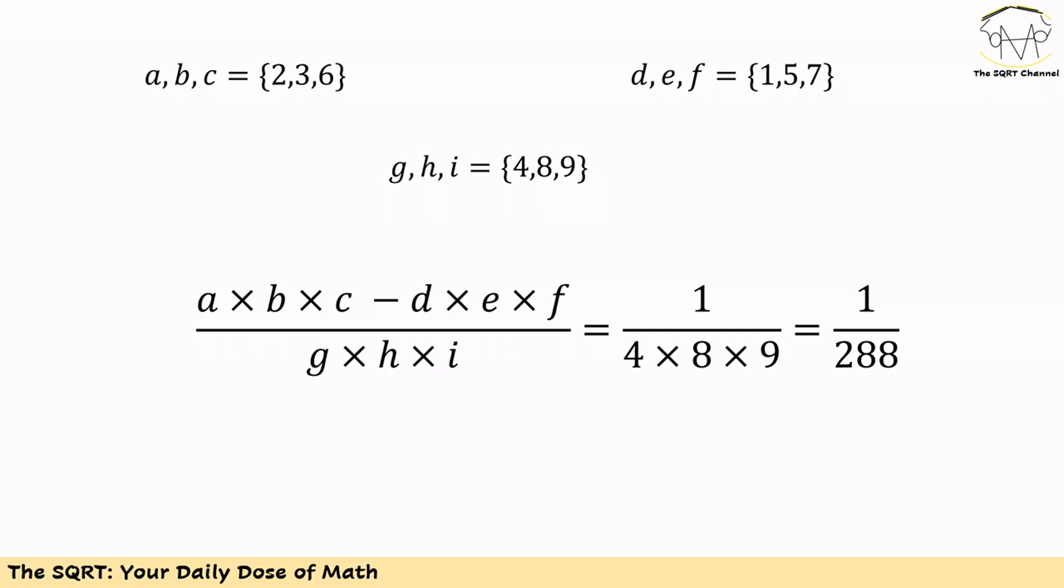So overall, we are going to simplify the fraction and write it as 1 for the numerator and 4 times 8 times 9 for the denominator. If you simplify it, then we are going to have 1 over 288 as the minimum value that we can have for the fraction. And that's our answer.